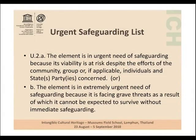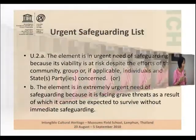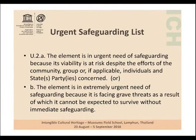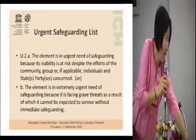The first list is the urgent safeguarding list. This is basically a list which UNESCO is trying to encourage countries to identify elements of intangible cultural heritage which are in danger, which need a safeguarding plan, which need international assistance. Once things are put on this list, countries are eligible to ask for money from the fund for intangible cultural heritage in order to put in place programs and activities to try to revitalize these things that are in danger.